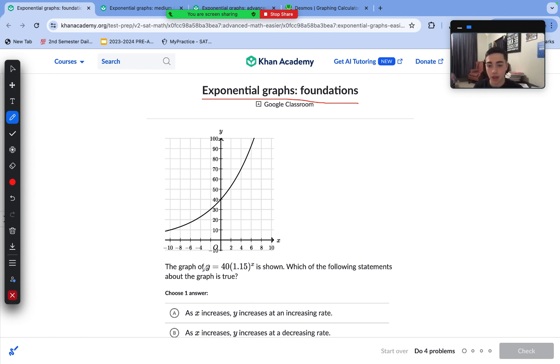The graph of this exponential equation is shown. Which of the following is true? We need to understand the format of exponential equations, which takes the form A(B^x), where B is the increasing or decreasing factor—increasing if it's greater than 1, decreasing if it's less than 1—and A is the y-intercept, or when x equals 0, the y value is going to be A.